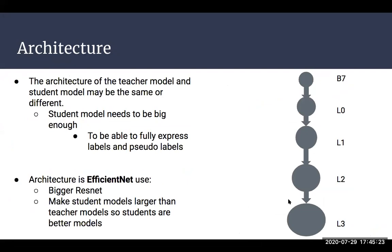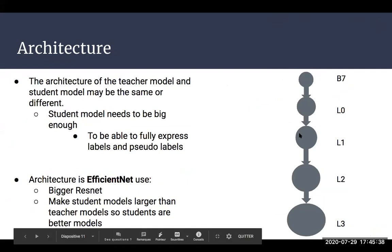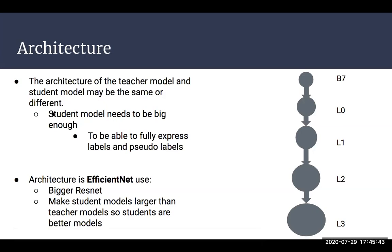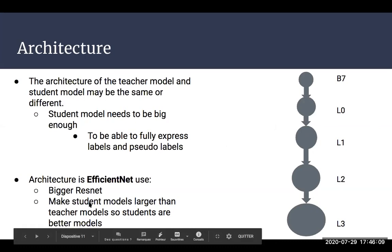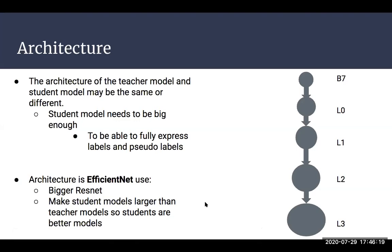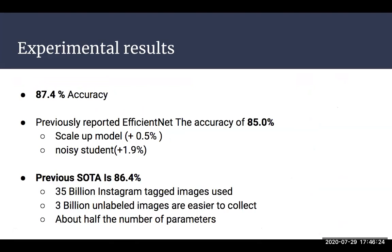About the architecture of the model: they scale up the model using EfficientNet as the base model, scaling up at each iteration. We have different sizes of models here. The architecture of the teacher model and the student model may be the same or different. The student model needs to be big enough to fully express the labels and pseudo labels. The EfficientNet model is bigger than the ResNet one, and using EfficientNet makes the student model larger than the teacher model.